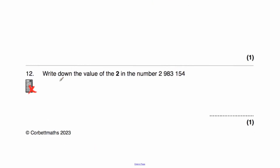Question number 12 says write down the value of the digit 2 in the number 2,983,154. The 2 is in the millions column, so the value of that digit would be 2,000,000 — a 2 followed by six zeros.